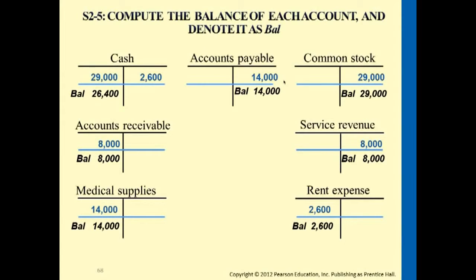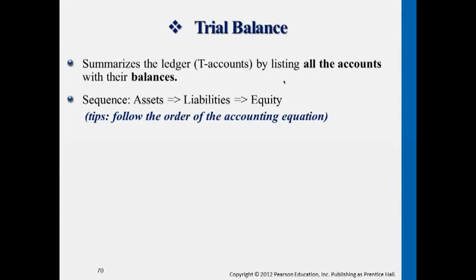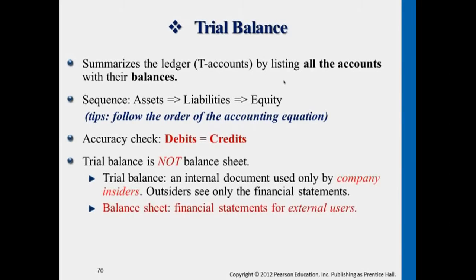The sequence for trial balance is the same as how we write the accounting equation. We start from assets, then list liabilities balances, then equity balances. At the end, we want to make sure that the debit column equals the credit column — confirming that everything has been posted correctly from journal to ledger to trial balance.